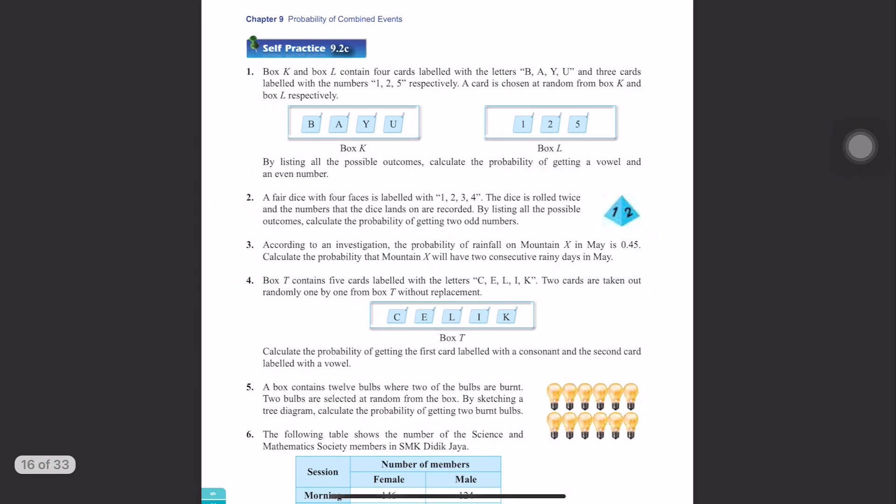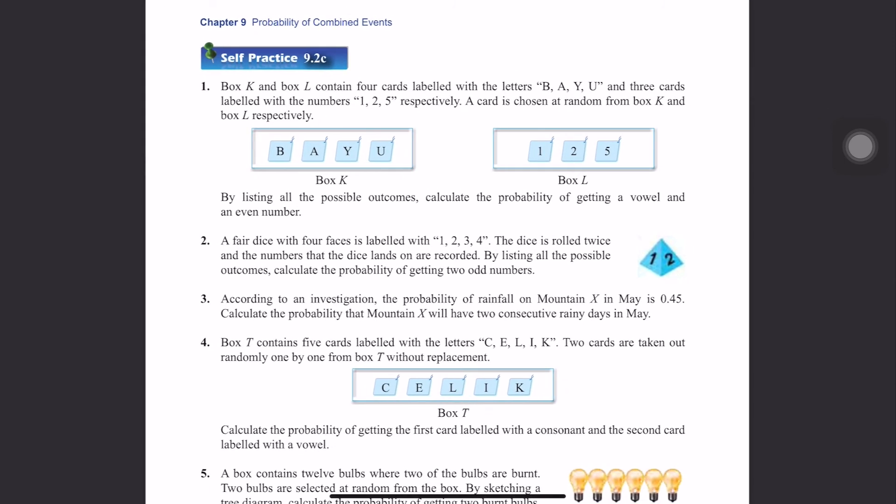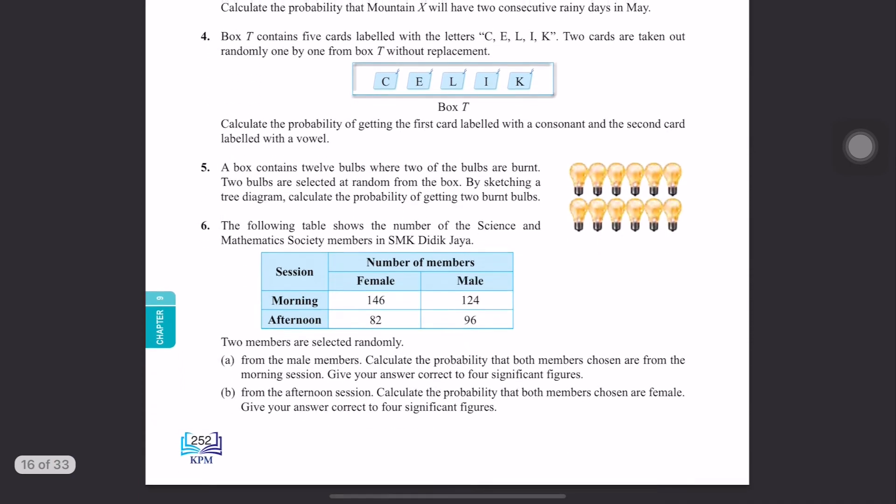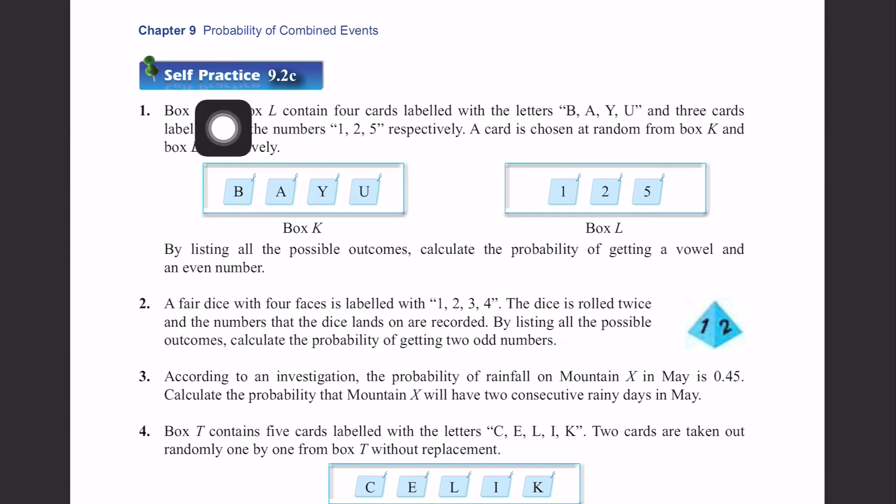Okay. Now let's look at self-practice 9.2C. I'm going to do some of the questions with you. So let's do the first question. Box K and box L contain 4 cards labeled with letters B, A, R, U and 3 cards labeled with numbers 1, 2, 5 respectively.